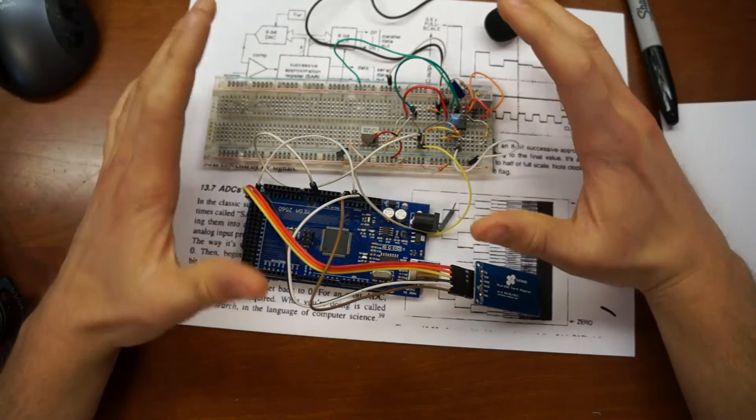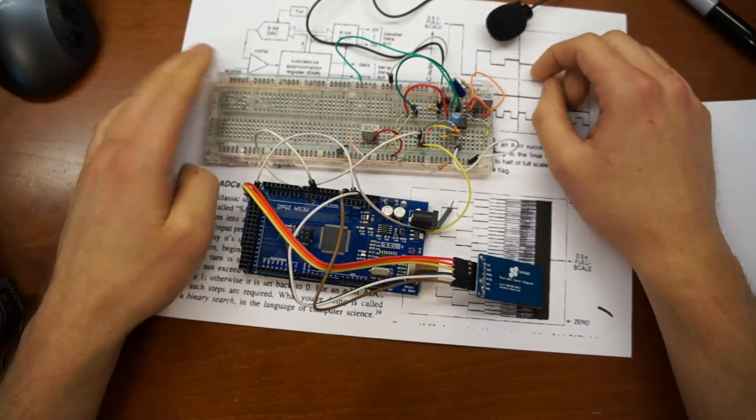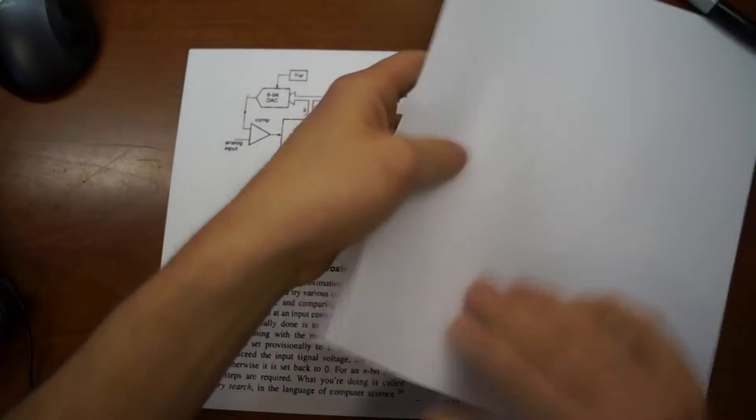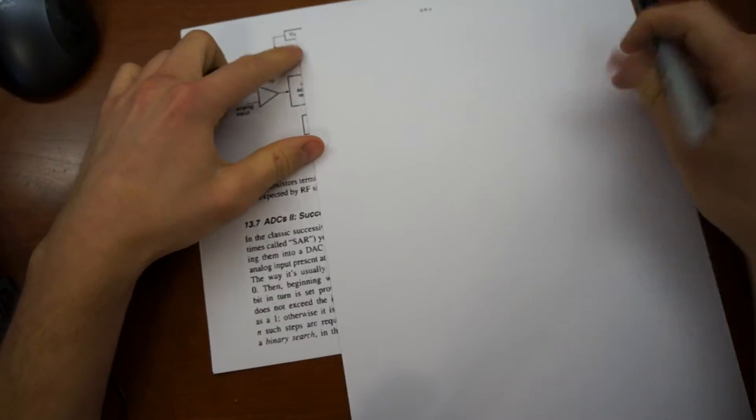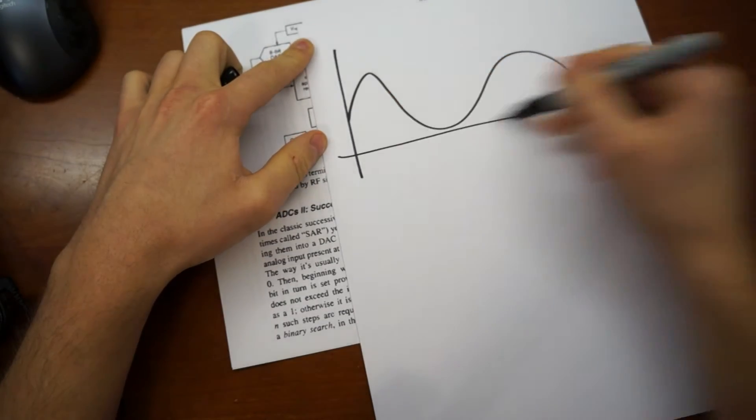So before we go into the circuitry and have a little bit of fun with this, I want to talk about analog to digital converters. So how do computers talk to the real world? In the world, we deal with smooth signals.